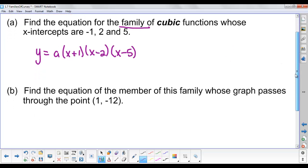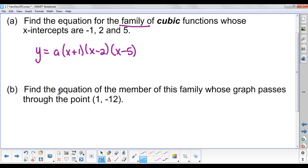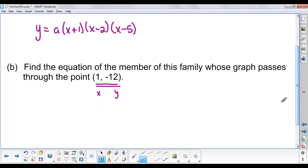More specifically, I want you to take that family and find an equation of the member that passes through the point (1, -12). We know 1 represents x and -12 represents y. So take that general equation and sub in for x and y: -12 = a(x+1)(x-2)(x-5).